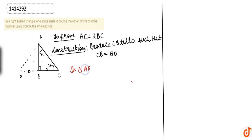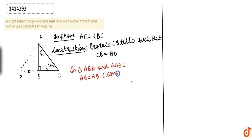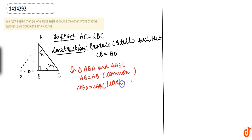Now in triangle ABD and triangle ABC: AB is equal to AB, which is the common side. Angle ABD is equal to angle ABC, each being 90 degrees. And BD is equal to BC by construction.